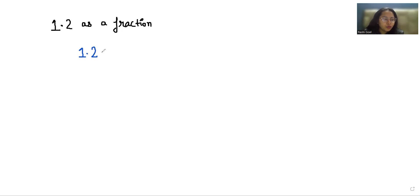So 1.2, we have to convert it into a fraction. We have to multiply the numerator and denominator by 10 for each digit after the decimal point. There is one digit after the decimal point, so we multiply by 10 in the numerator as well as in the denominator.